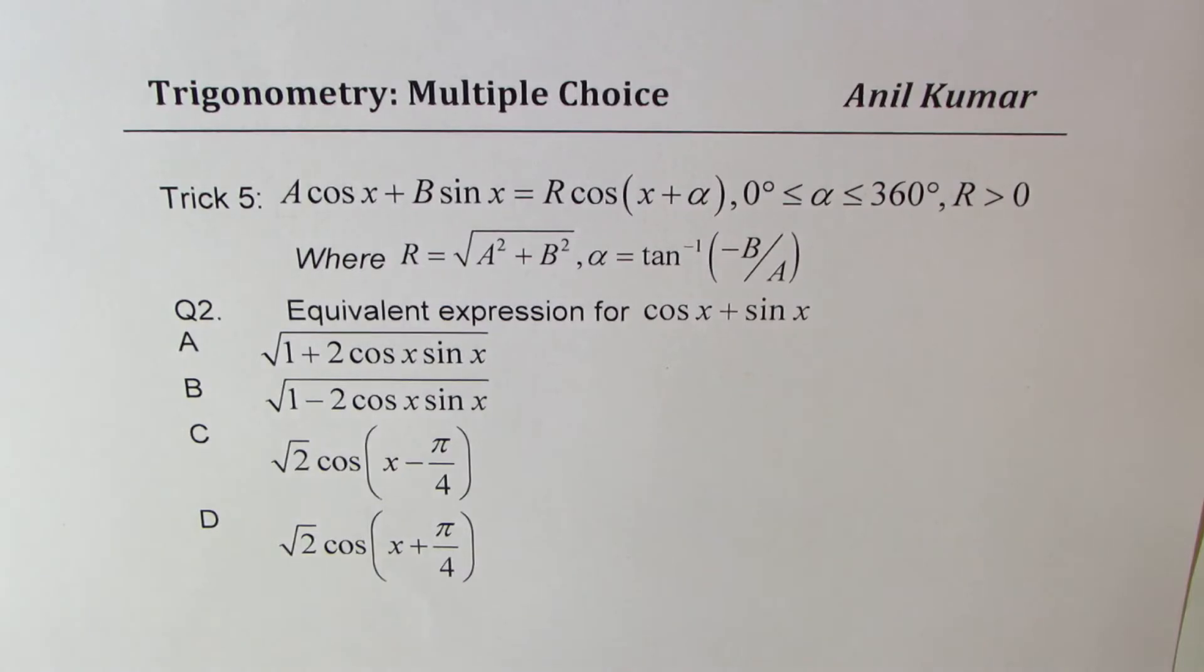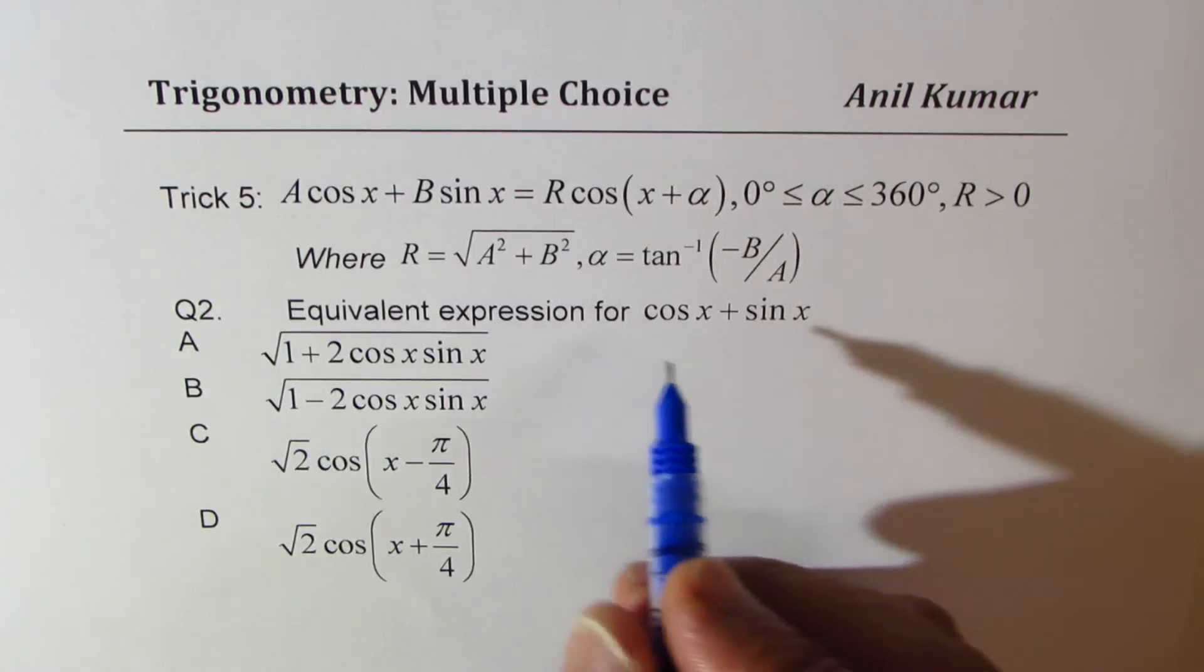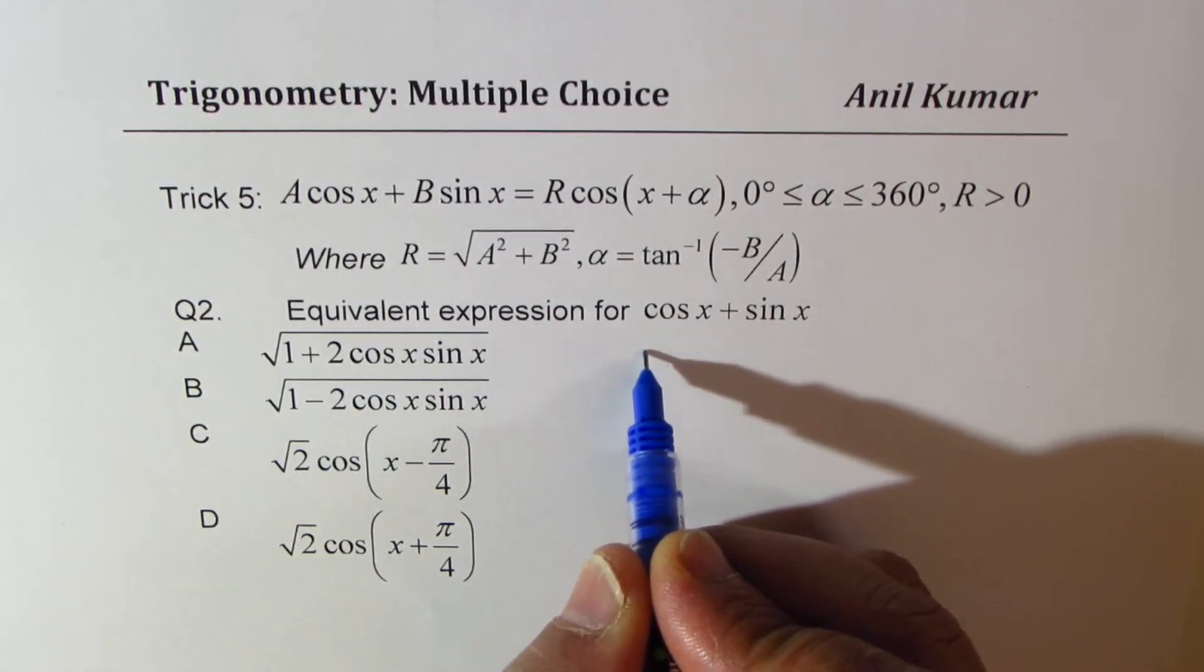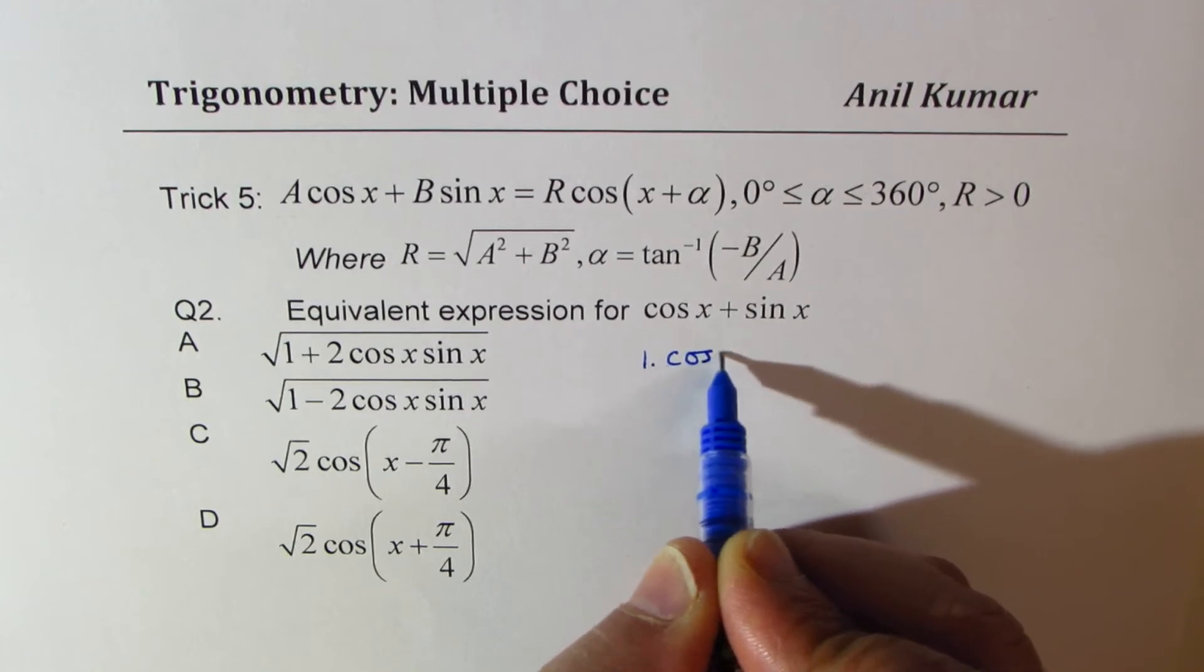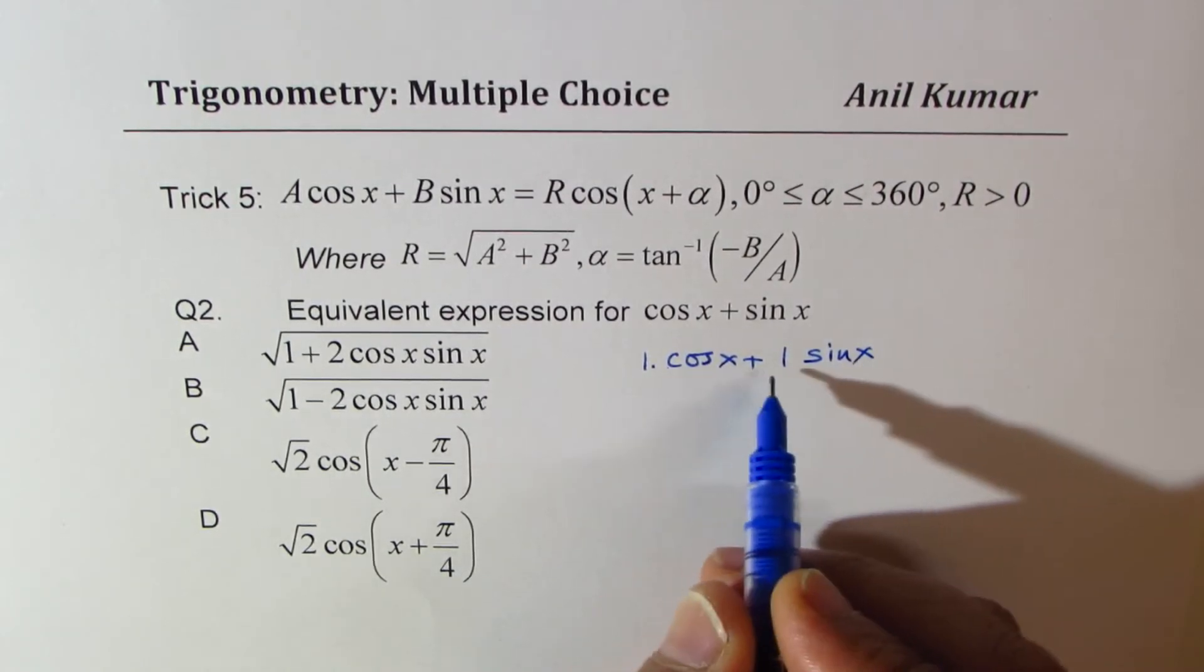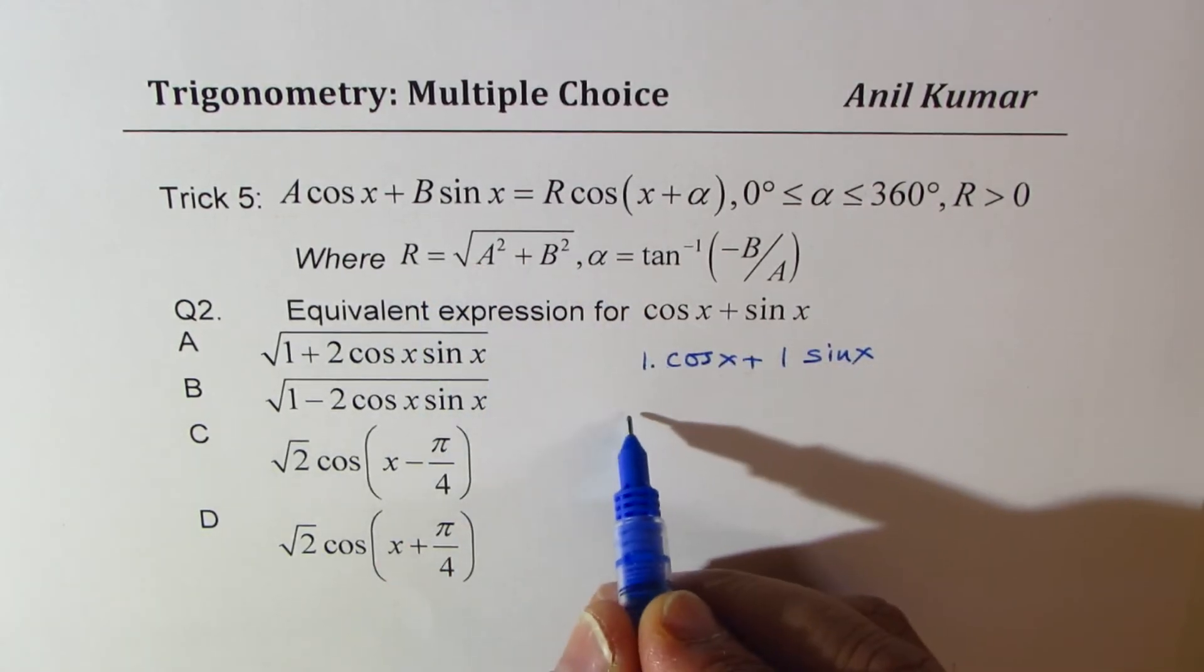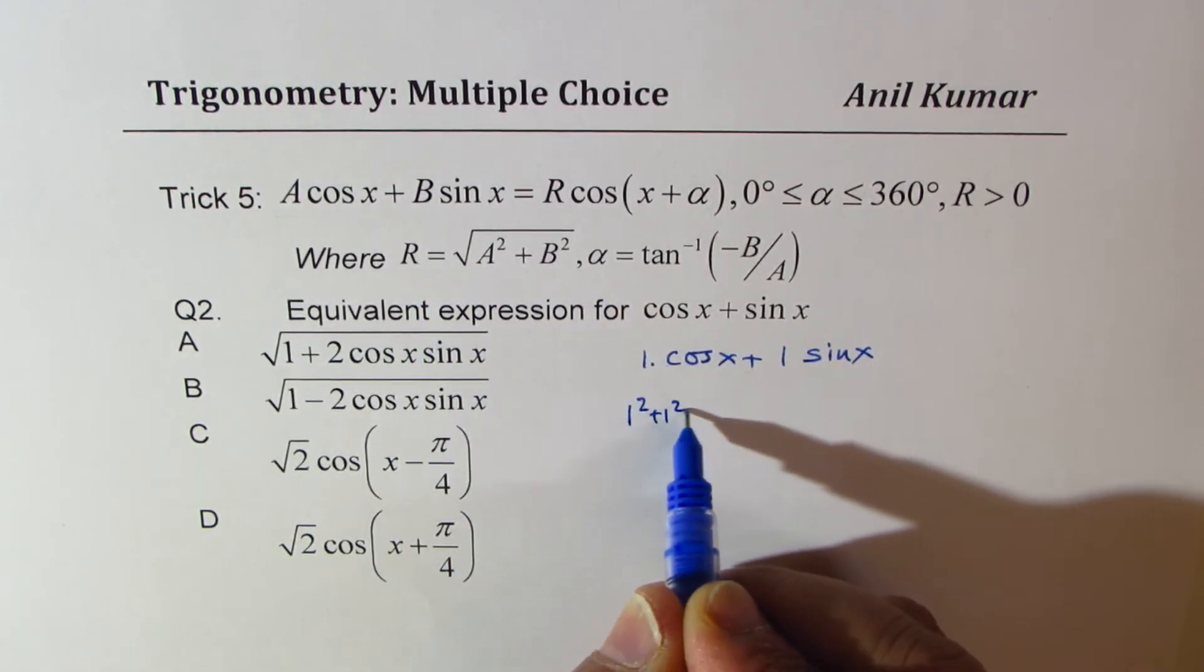The second question here is: equivalent expression for cos x plus sin x. Now the coefficients could be treated as 1, right? 1 cos x plus 1 sin x. In this case, I could write this as R, which is 1 squared plus 1 squared square root, which is square root of 2.